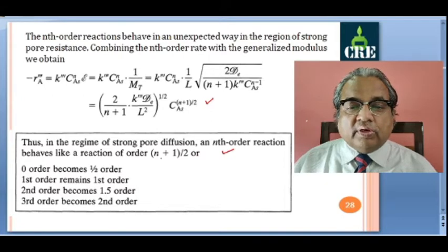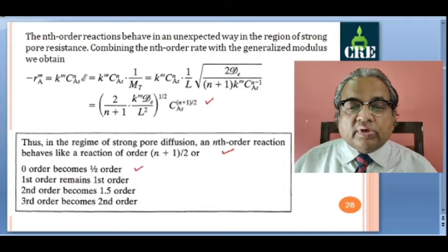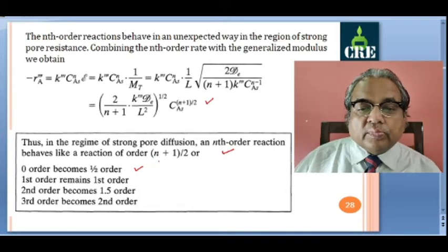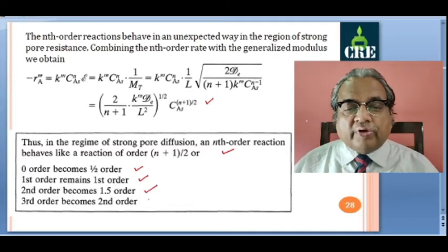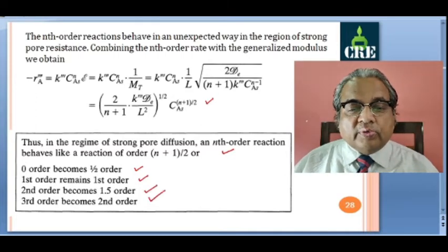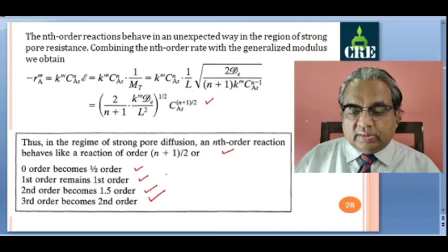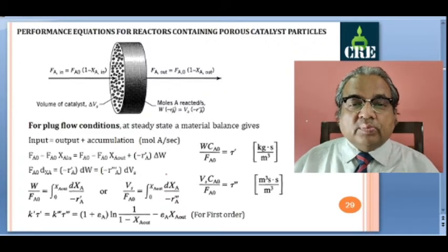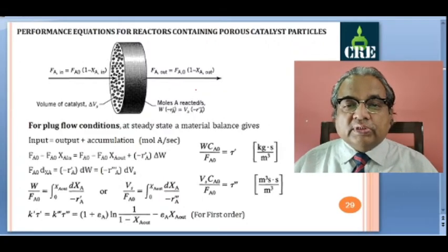Combining the nth order case with the generalized Thiele modulus, substituting for M_T gives the rate as [2/(n+1) · K''' · D_E / L²]^(1/2) · C_AS^((n+1)/2). In the regime of strong pore diffusion (tanh(M_T)/M_T approximated as 1/M_T, for M_T greater than 4), an nth order reaction behaves like a reaction of order (n+1)/2. So a zero-order reaction behaves as half order, first order remains first order, second order behaves as 1.5 order, and third order behaves as second order.